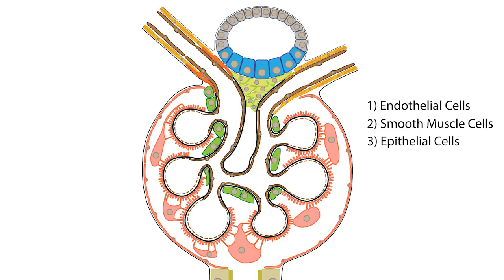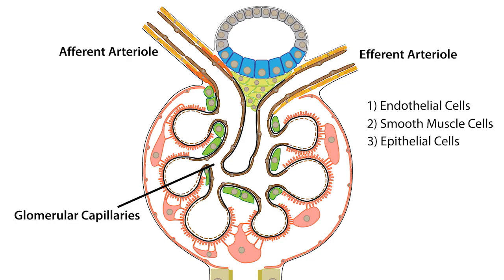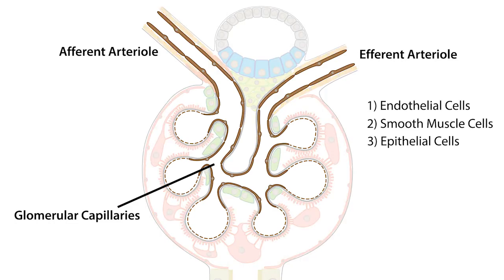Like the vasculature throughout the body, the afferent arterioles, the glomerular capillaries, and the efferent arterioles are lined with a single layer of endothelial cells.